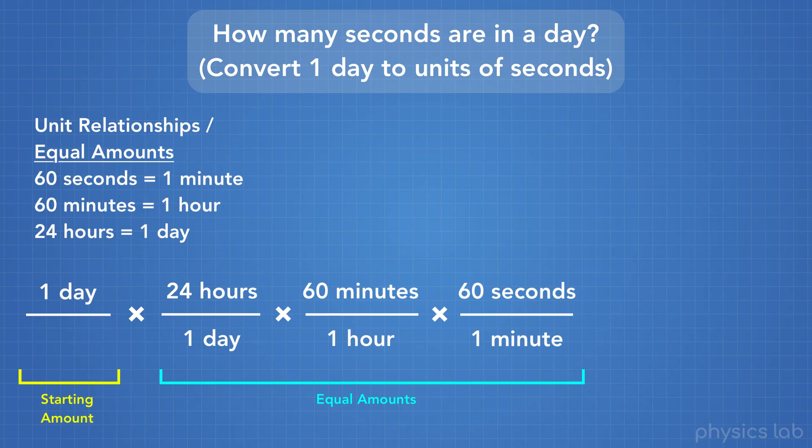Now, we mentioned that we could write these relationships either way. For example, 24 hours per one day, or one day per 24 hours. So how do we know which way to write it? How do we know which one goes on top when we're writing these fractions?